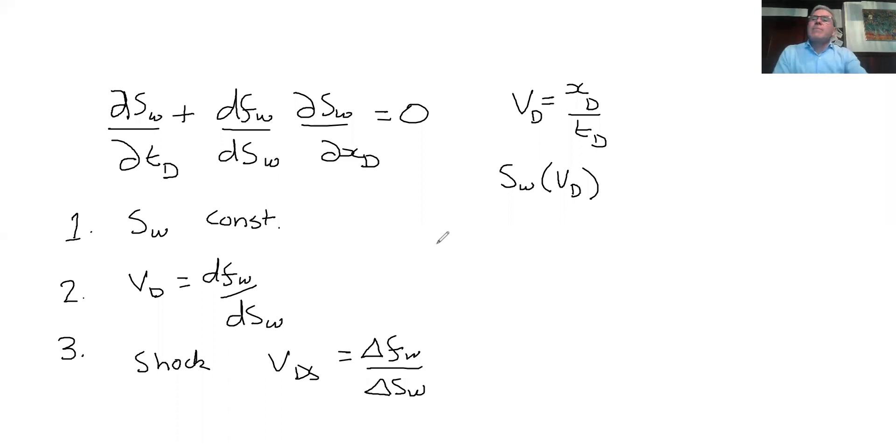And then we're going to have the boundary conditions that are going to be at X_D equals naught and T greater than zero. We have a saturation 1 minus S_OR.